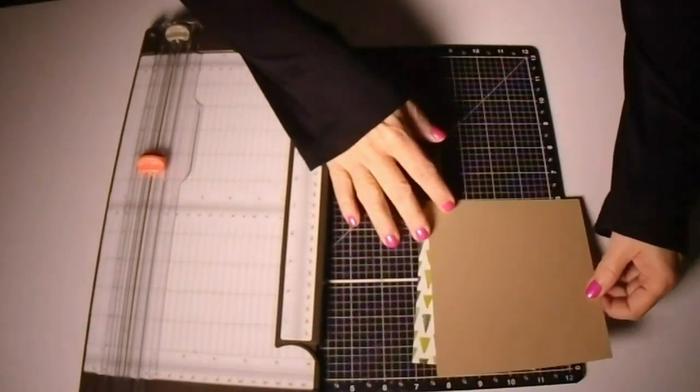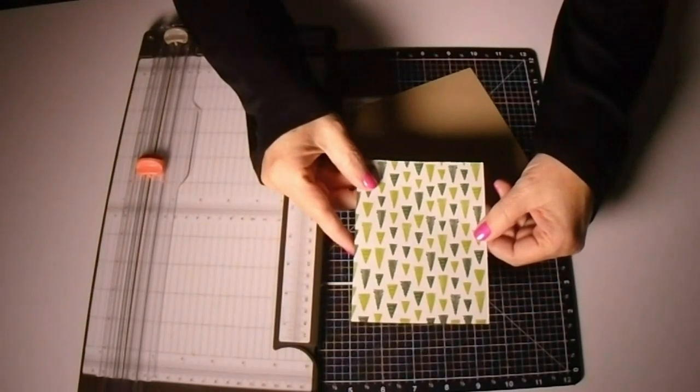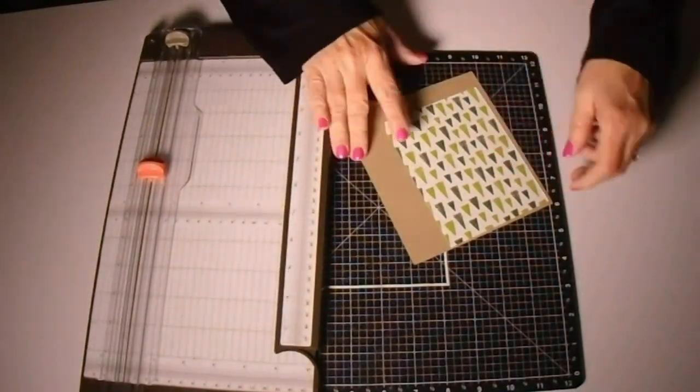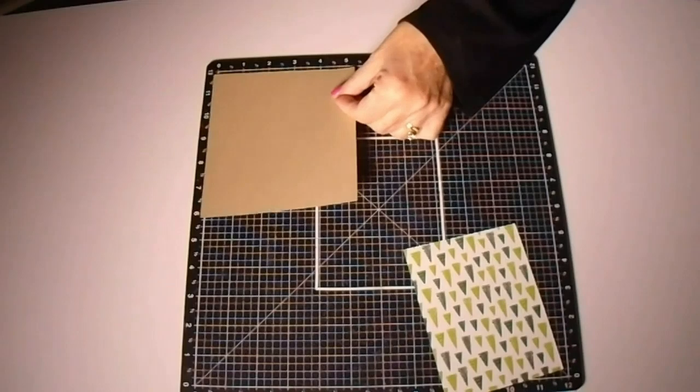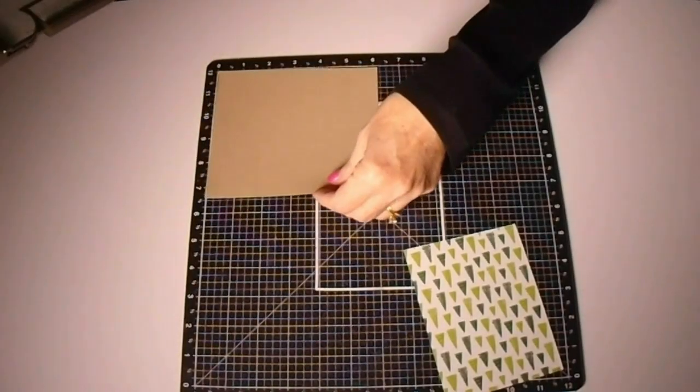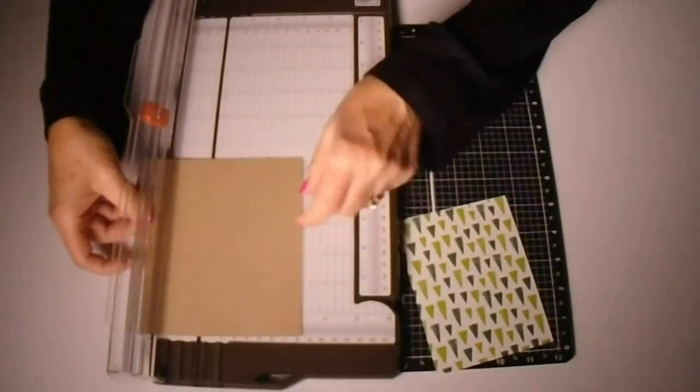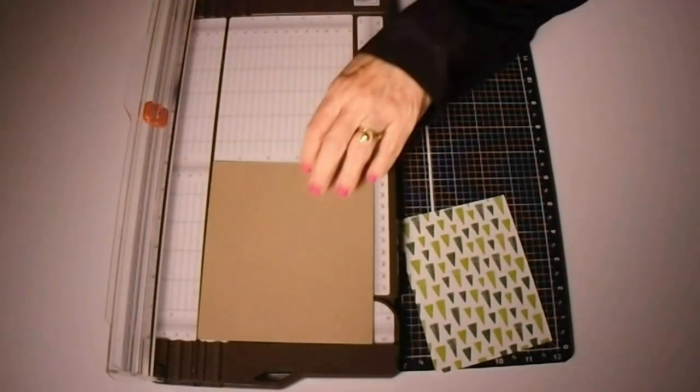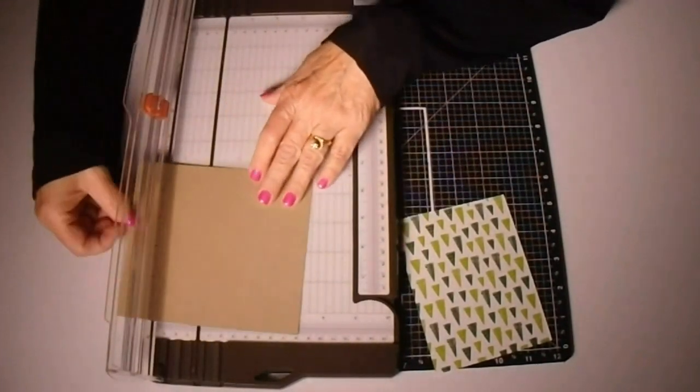We'll cut that paper to four by five and a quarter, and you'll see that we also end up using both sides of this paper to save with money, save our little paper, and make it a lot easier. On the back side of that paper are the smaller trees.